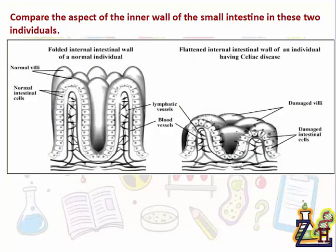Let's take an example. Here we have a figure of the internal wall of two individuals: one normal individual and another individual having a disease called celiac disease in his intestine. The question says compare the aspect of the inner wall of the small intestine in these two individuals. Aspect means how does it look — what are its features?